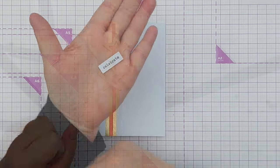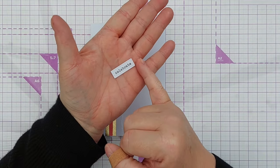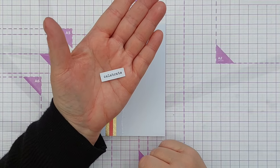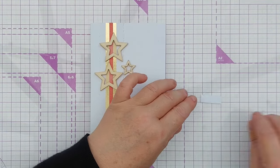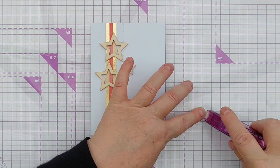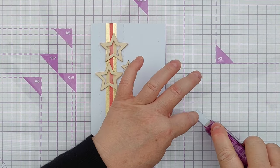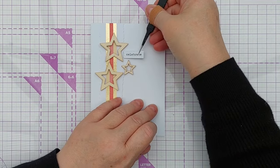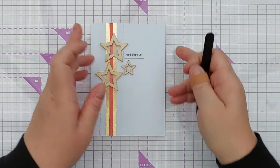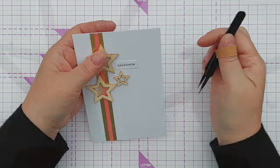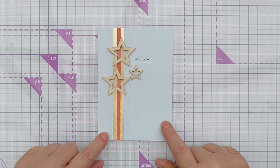And now for a simple sentiment—this just says 'celebrate' and I've cut it out with a stitched rectangle die. You could pop this up on a bit of foam if you wanted to give it some height, but I'm just going to add it here nestling around these stars. And there you have one clean and simple, fairly quick and easy Christmas card.